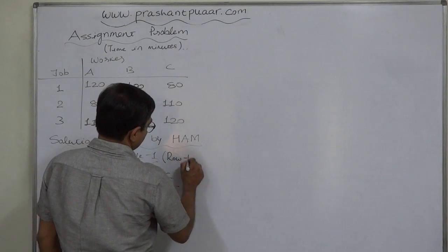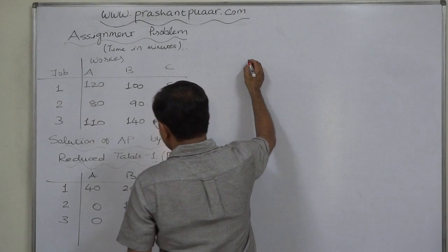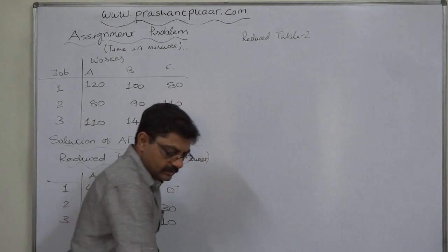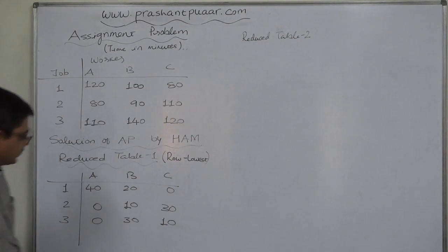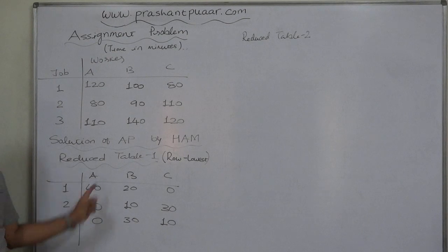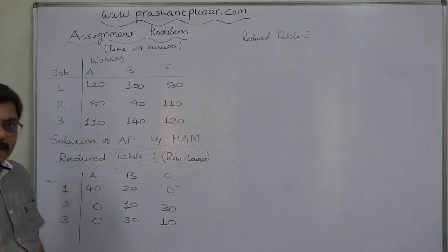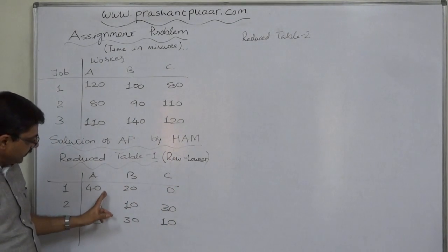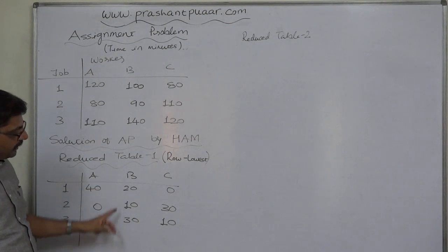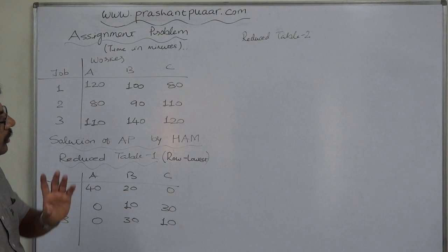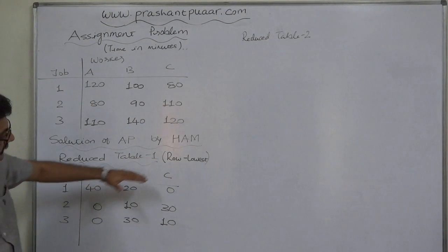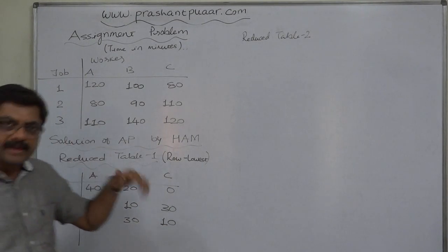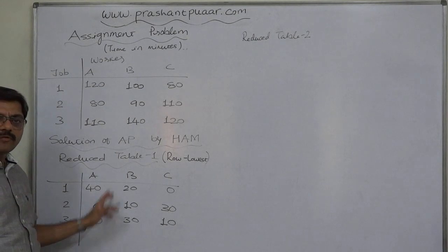Now for step 2 — reduce table 2. Before writing reduced table 2, let us check whether we have at least one zero in all the columns. If we do, we can bypass step 2. However, in column B there is no zero, so we must proceed to step 2. This step is very similar to the first one: instead of rows, we subtract the lowest value from each and every column.